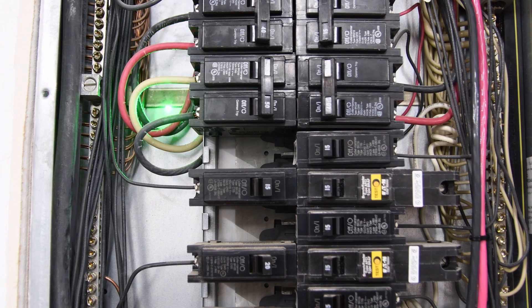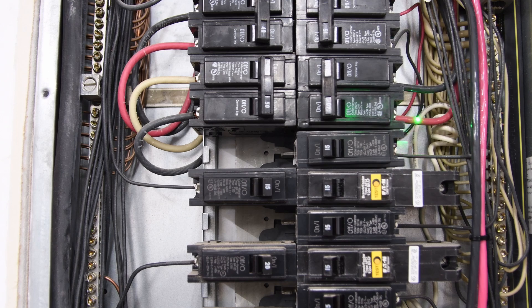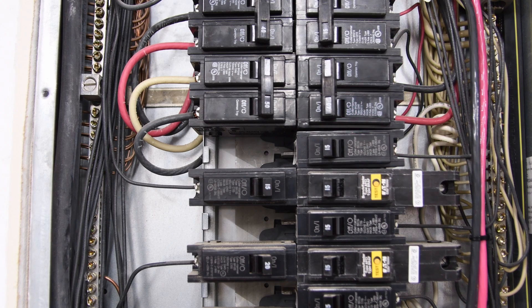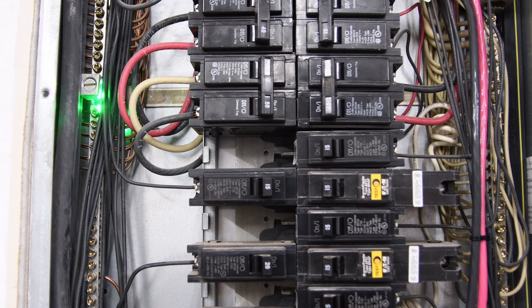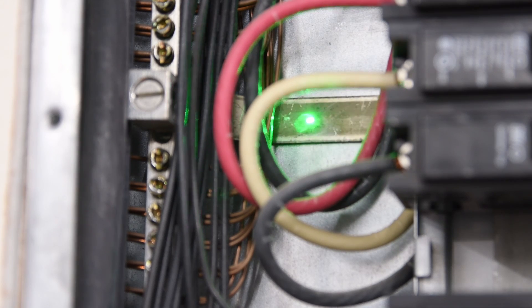You can see that bar right there running behind all these breakers and coming out right there is the bar connecting the ground to the neutral bar. This is where the connection is taking place.